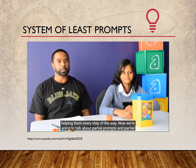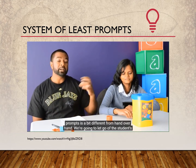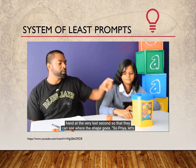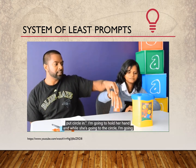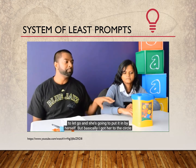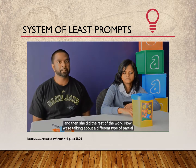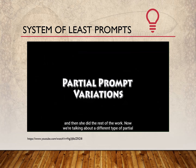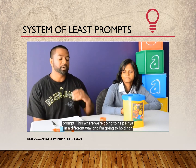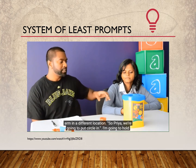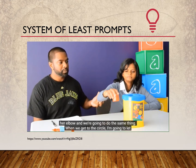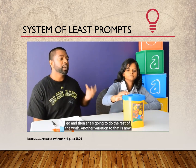A partial prompt is a bit different from hand-over-hand. We're going to let go of the student's hand at the very last second so that they can see where the shape goes. I'm going to hold her hand, and while she's moving toward the circle, I'm going to let go and she's going to put it in by herself — I got her to the circle and then she did the rest of the work. There's also a different type of partial prompt where I hold her arm in a different location — for example, holding her elbow, guiding her toward the target, and then letting go so she completes the action herself.